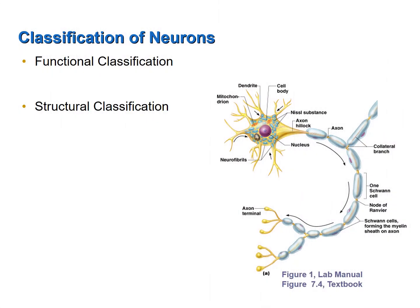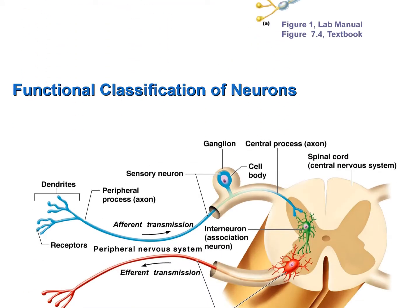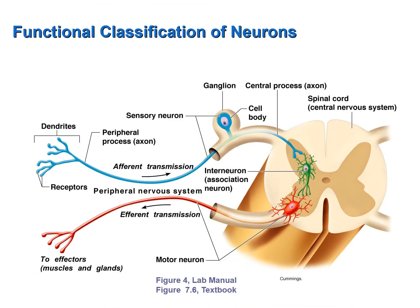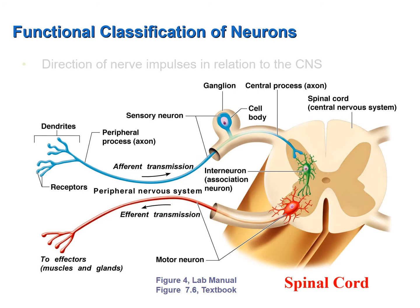Neurons can be classified functionally or they can be classified structurally. Let's look first at functional classifications of neurons. You are looking at a section of the spinal cord, so this is the central nervous system, and we have nerve fibers here in the peripheral nervous system. When we talk about classifying a neuron functionally, we're basically classifying it based on the direction in which it is sending nerve impulses.